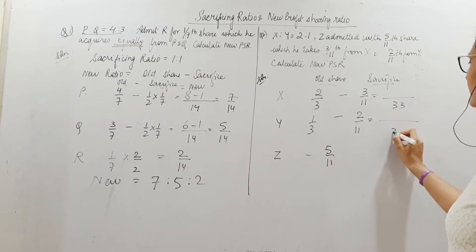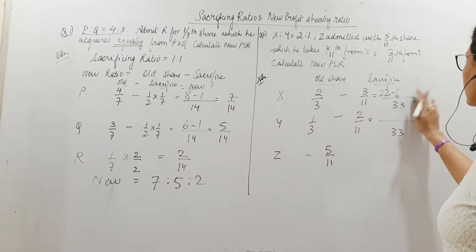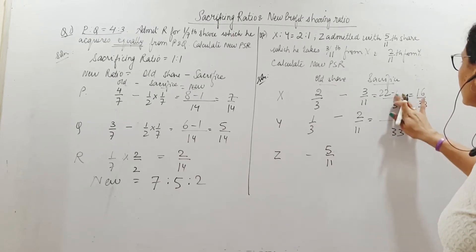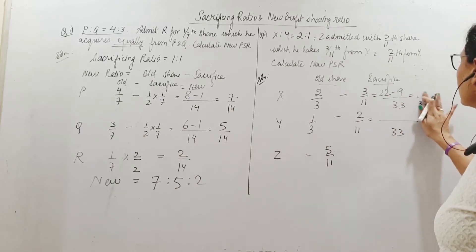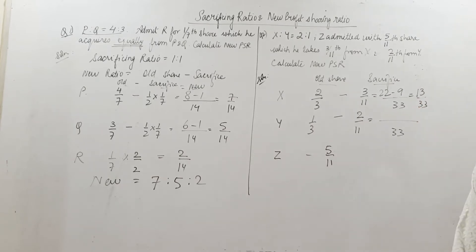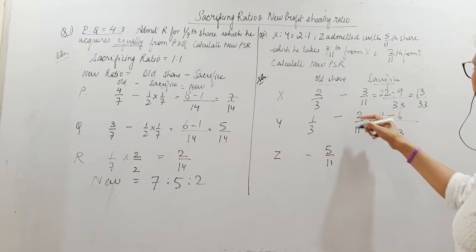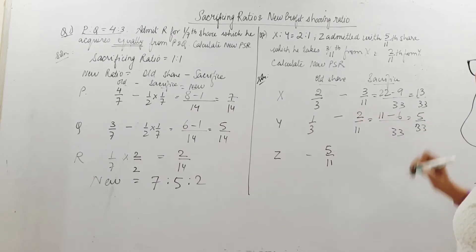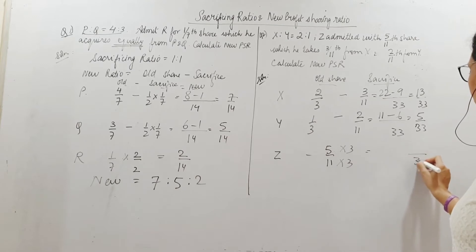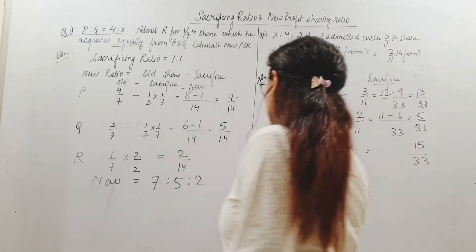LCM is 33. For X: 22 by 33 minus 9 by 33 equals 13 by 33. For Y: 11 by 33 minus 6 by 33 equals 5 by 33. Z's share is 5 by 11, which we convert to 15 by 33 to get a common denominator. Checking: 13 plus 5 plus 15 equals 33. So this is the new ratio.